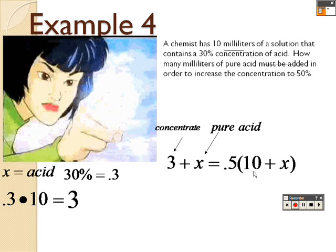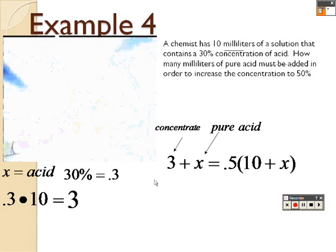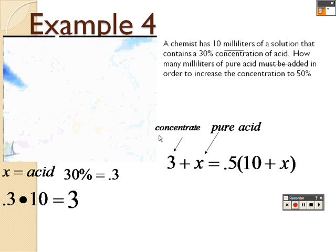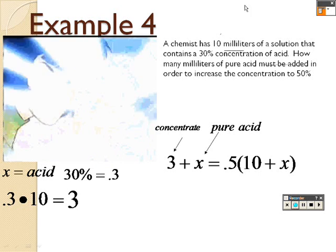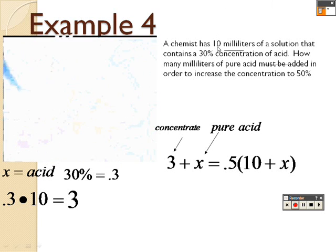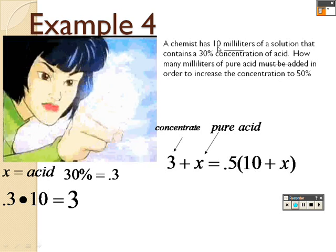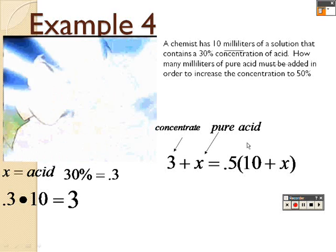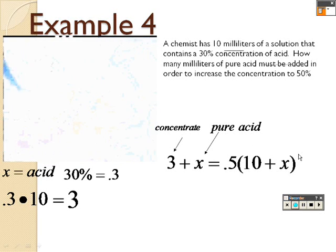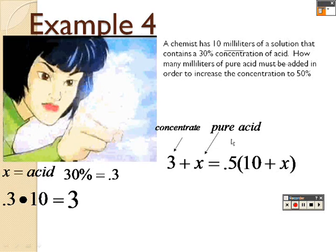If you keep this model in mind of how you set this problem up, almost every single problem is identical to this. Just literally the numbers are changed. Instead of 10, it might be 15 milliliters of solution at 45% that increase to 60%. Remember how the order is being plugged into this problem, and you should be fine.